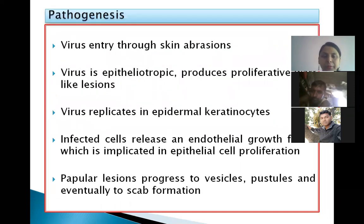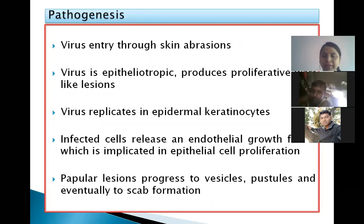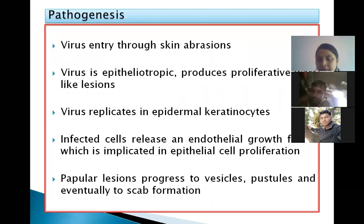Coming to its pathogenesis, virus entry occurs through skin abrasion and the virus is epitheliotropic, meaning it has affinity for the epithelium, where it produces proliferative wart-like lesions. It replicates in epidermal keratinocytes, and infected cells release an endothelial growth factor which is involved in the proliferation of epithelial cells.